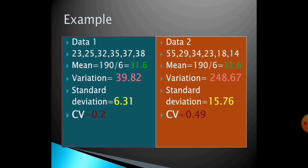The coefficient of variation for data set 1 is low at 20 percent, whereas for data set 2 it is 49 percent. So data set 1 is more consistent compared to data set 2, and the dispersion of the data is higher in data set 2. We can use variance and standard deviation to compare two data sets, and the coefficient of variation also helps us compare two data sets.